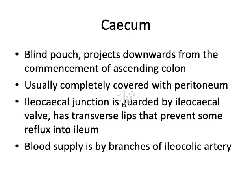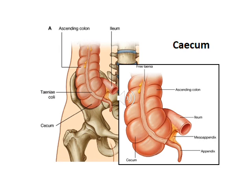The cecum is a blind pouch that projects downwards from the commencement of the ascending colon and is usually completely covered with peritoneum. The ileocecal junction is guarded by the ileocecal valve, which has transverse lips that prevent some reflux into the ileum. The blood supply to the cecum is given by the ileocolic artery. The tenia coli of the cecum lie one anterior, one posteromedial, and one posterolateral — all three converge on the base of the appendix, which is a useful guide to identify the appendix.